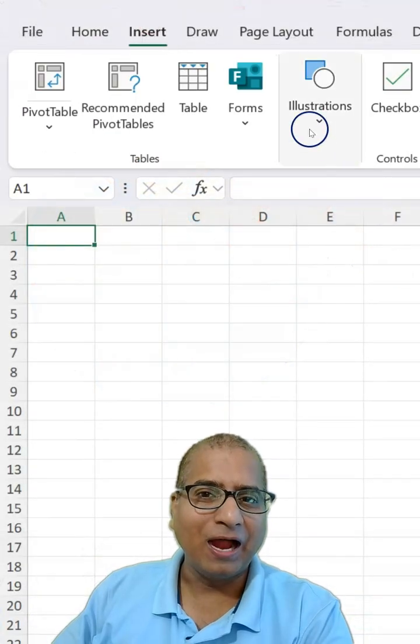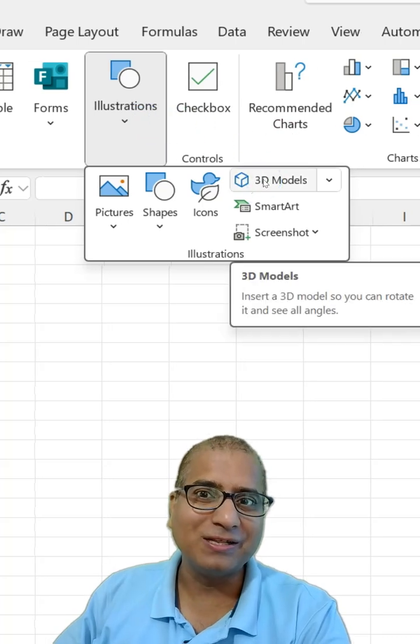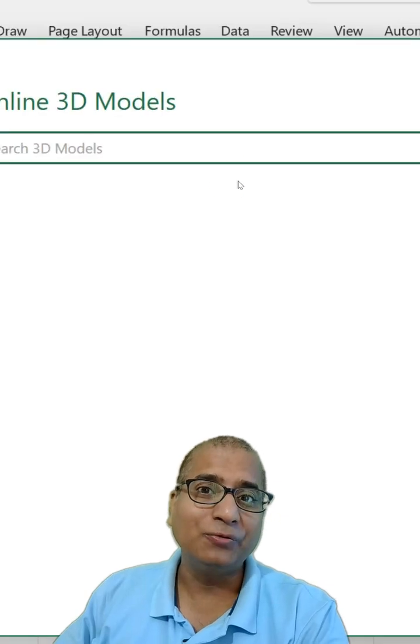Go to Insert and under Illustrations you should be able to find an option called 3D Models. Click on it and look for the model that you need.